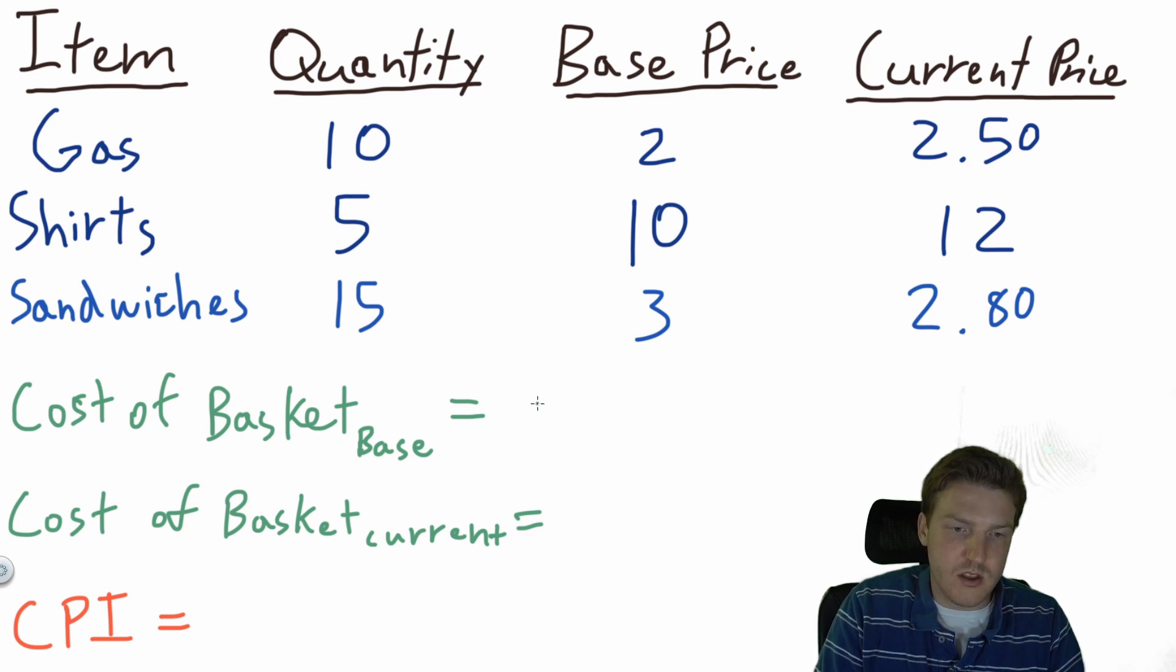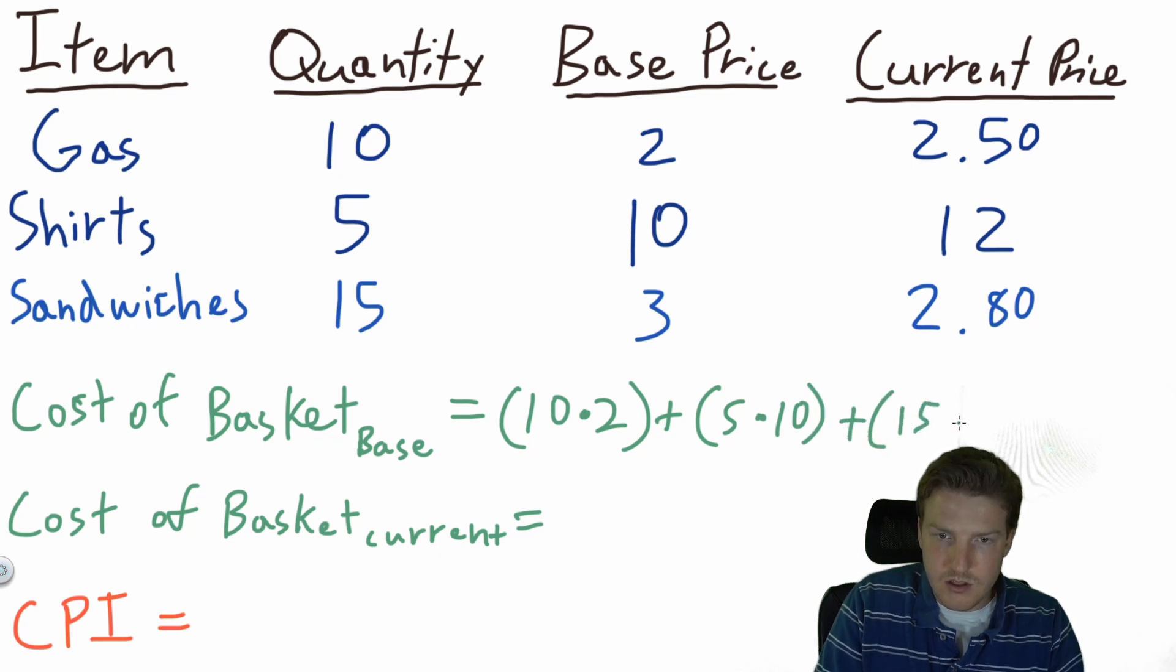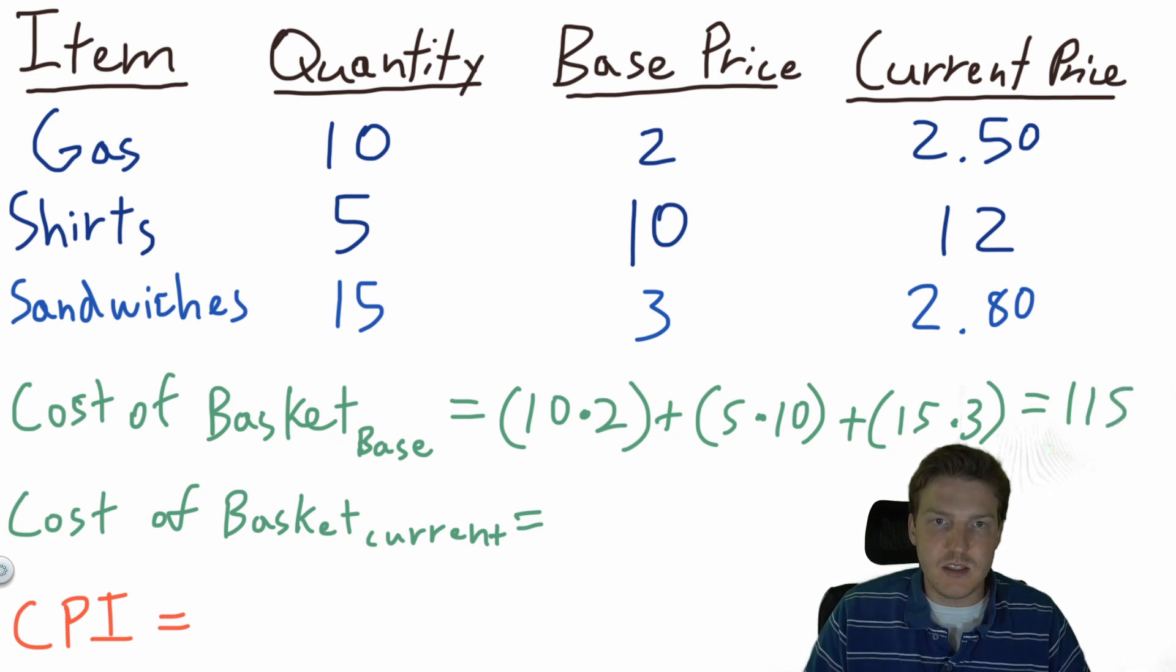So first we're going to calculate the cost of a basket at the base prices. It's just going to be 10 gallons of gasoline times $2, plus 5 shirts times $10, plus 15 sandwiches multiplied by $3 per sandwich. That's going to give us a value of $115 for the base index.